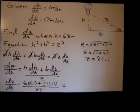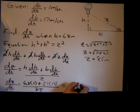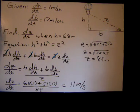So dZ/dt equals 51 times 17 plus 68 divided by 85, and we get 11 meters per second.